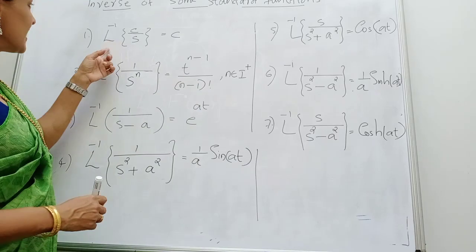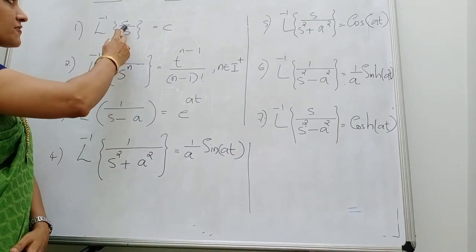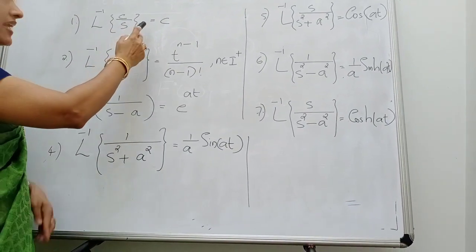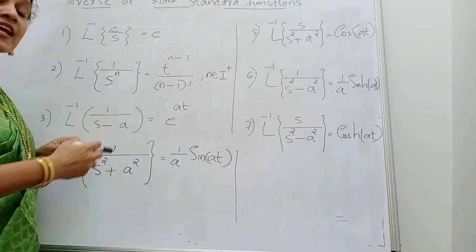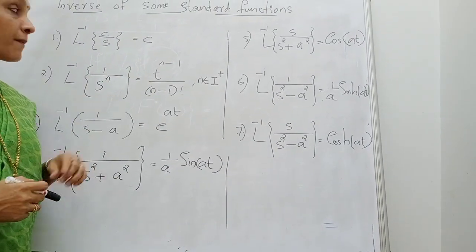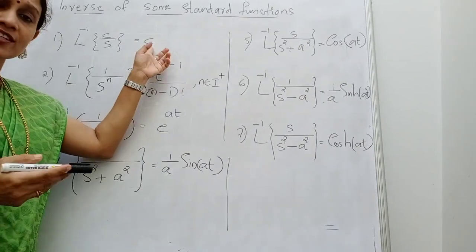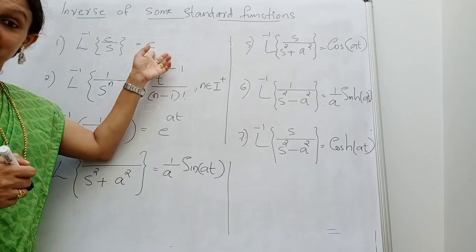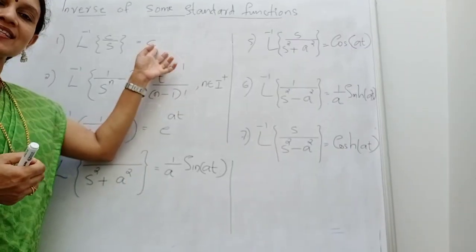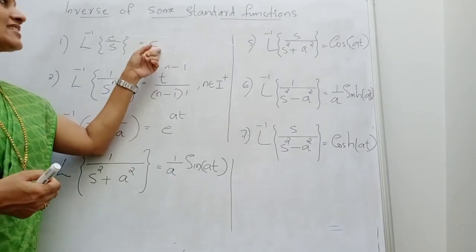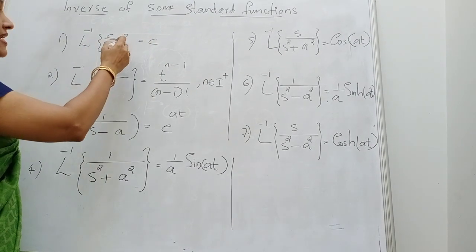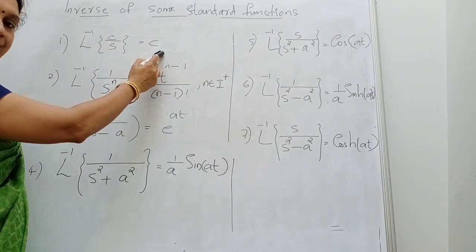The first result is L inverse of c/s, which is equal to c. Recall that in Laplace transforms, L of constant c is c/s. So L inverse of c/s is equal to c.